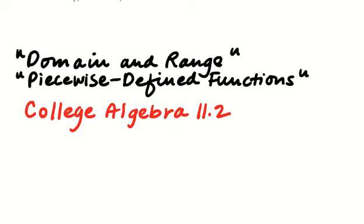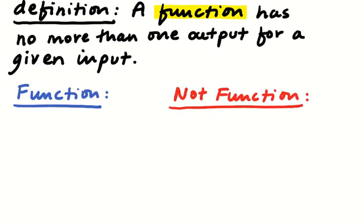In this video we're going to be talking about domain and range, piecewise defined functions, and what is and isn't a function. The defining characteristic of a function for our sake is that it has no more than one output for a given input.